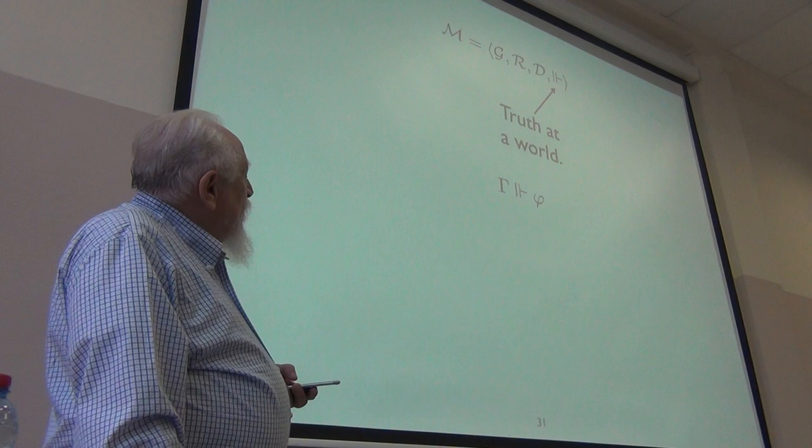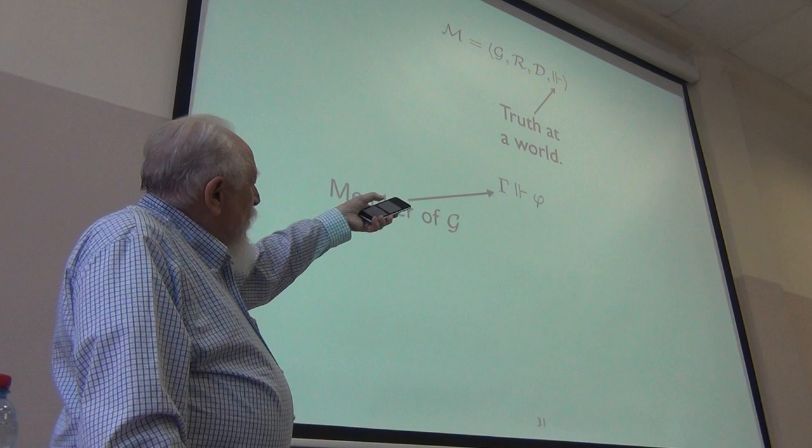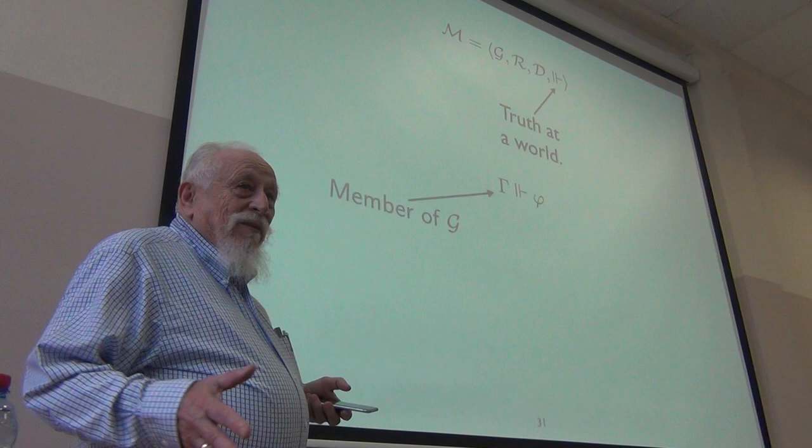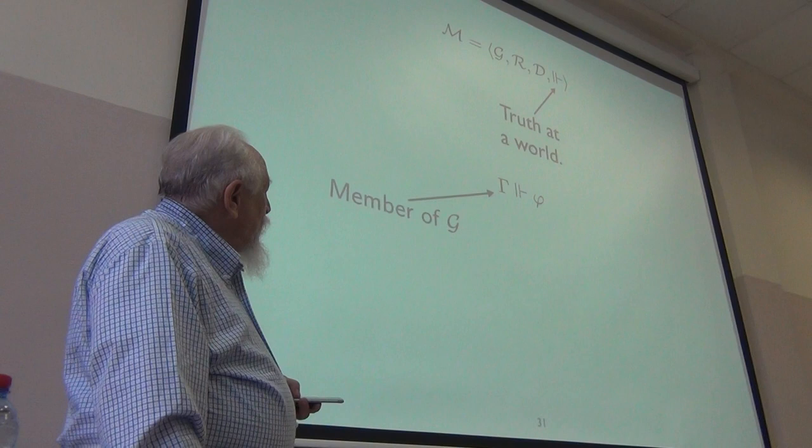We need to define what it means for a formula phi to be true at gamma in such a model. All the conditions are exactly as they are in the modal case, except what's the quantifier condition look like.